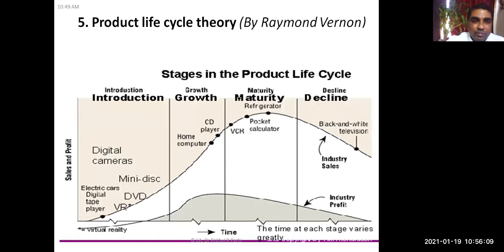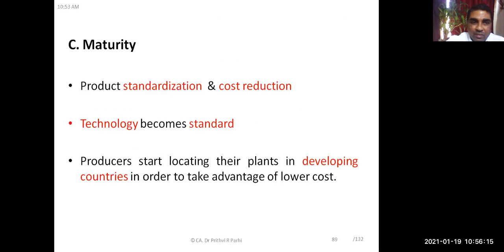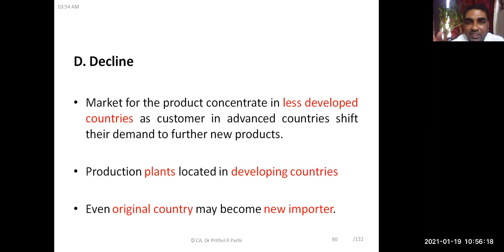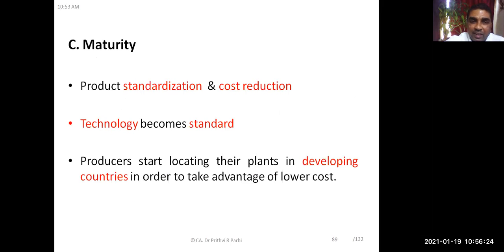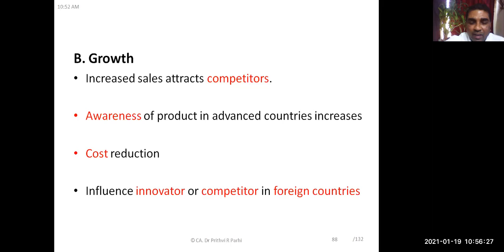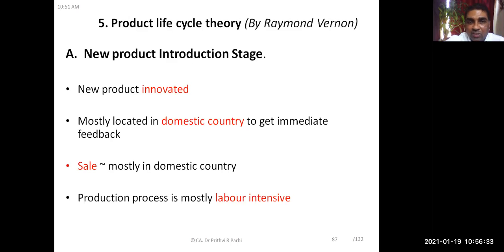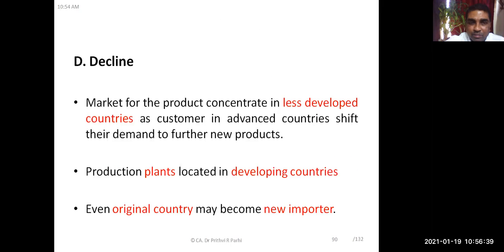To summarize, there are four stages: introduction, growth, maturity, and declining stage. International trade mostly happens in the maturity stage. Some international trade also occurs in the growth stage. In the introduction stage, production facilities are mostly located domestically. At the declining stage, export-import happens as the market shifts to less developed or underdeveloped countries.